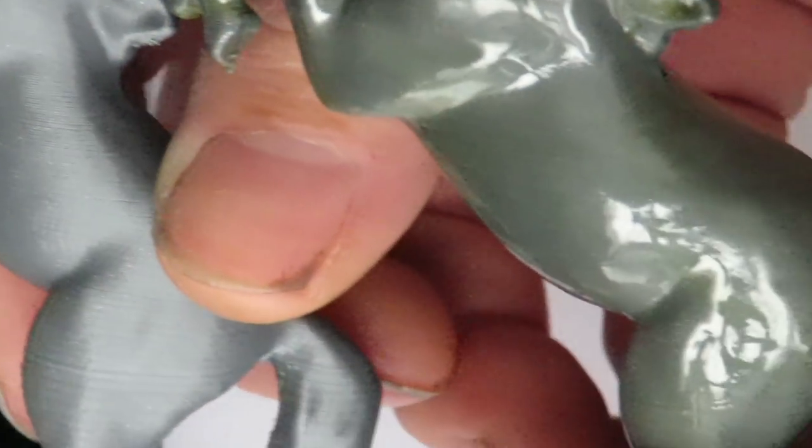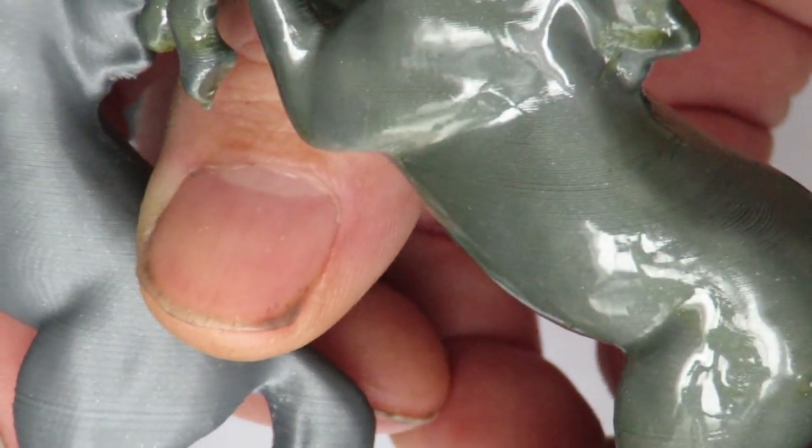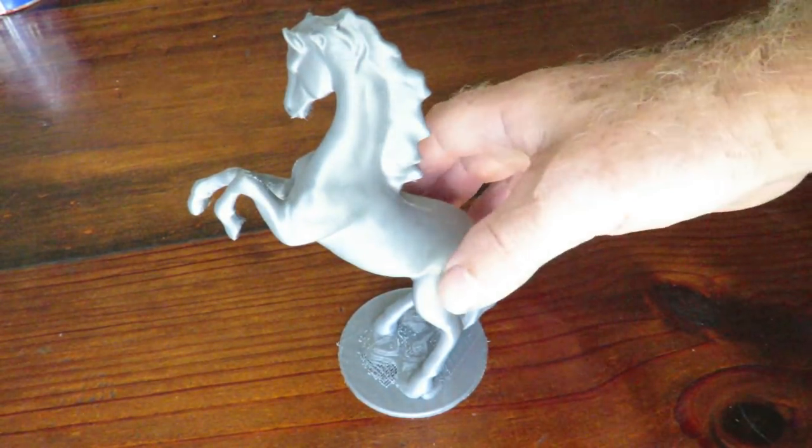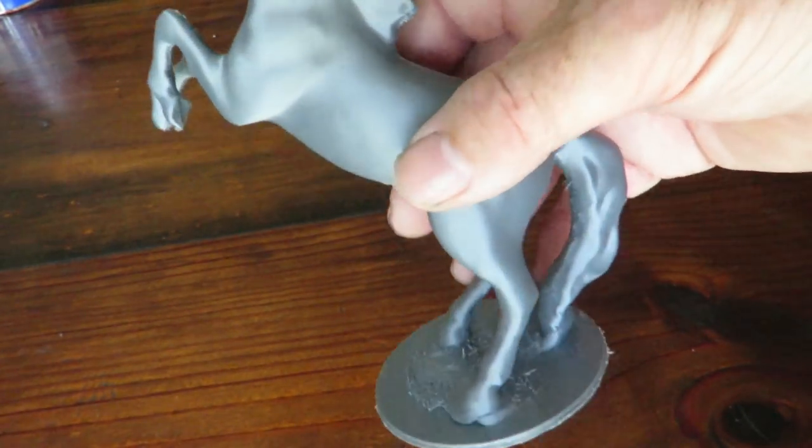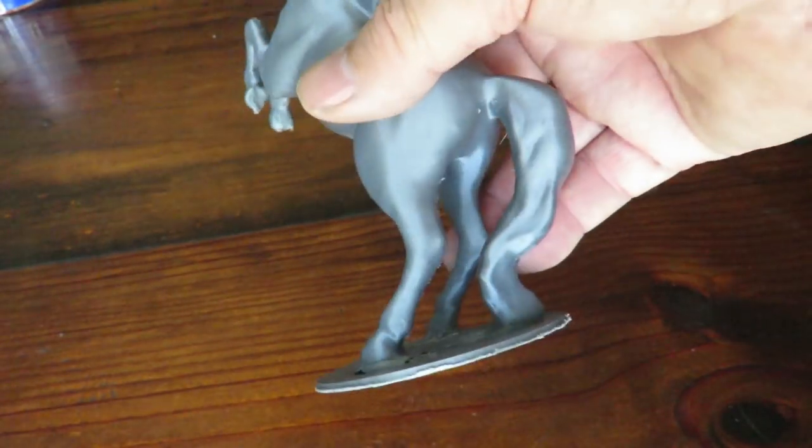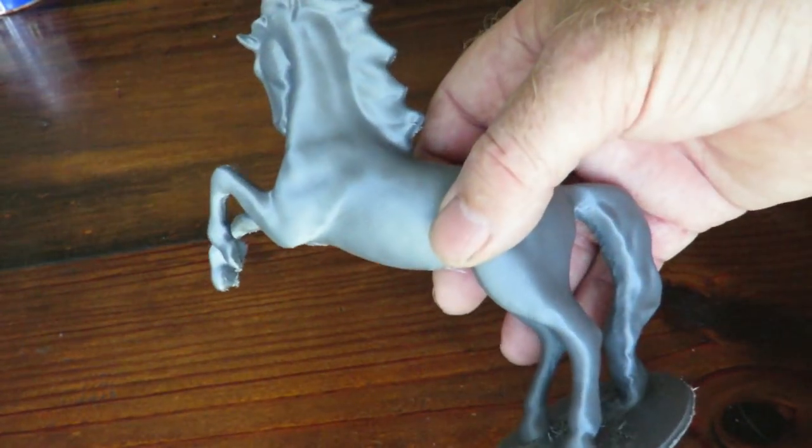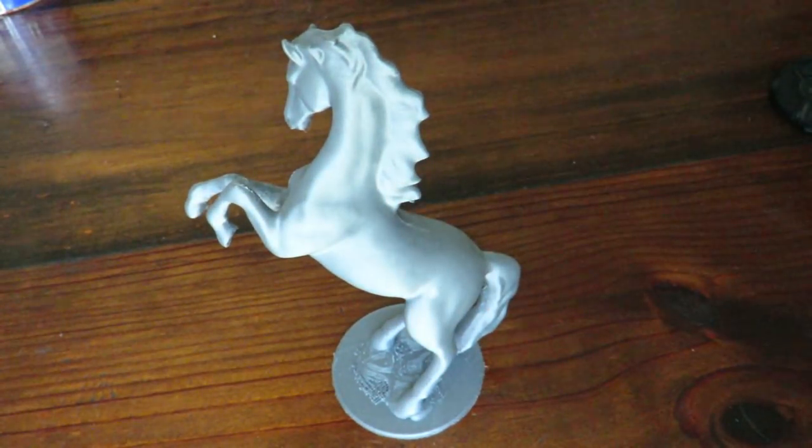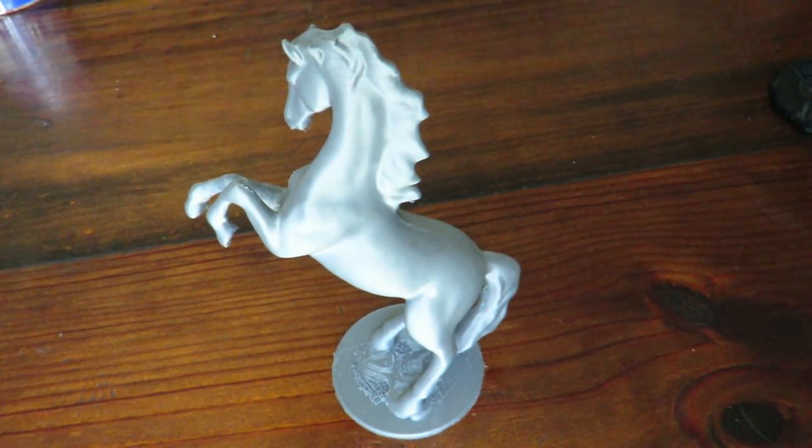And I think you can see that the gloss on this is quite impressive compared to a non-coated model. I'll put it on the little rotisserie type thing and let you compare the two for yourself. Here we go, this is a before and as you can see the plastic is quite shiny, it's quite nice, this is a very good print.